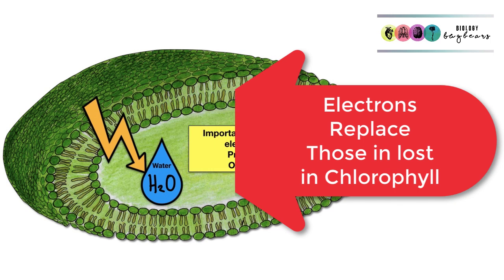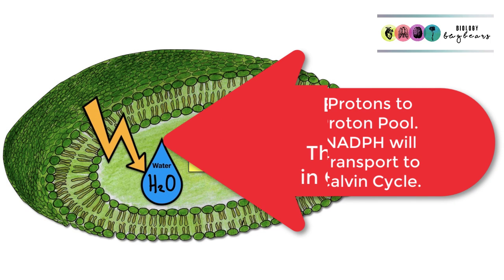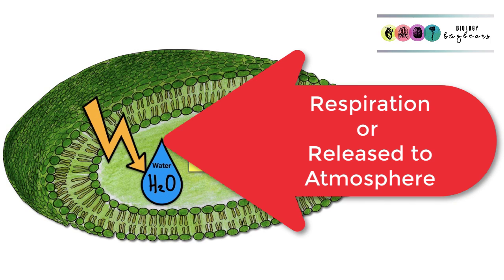The electrons go to replace those lost by chlorophyll in photosystem 2. The protons go into a proton pool and will eventually be transported by NADPH to the dark stage reactions or the Calvin cycle. The oxygen either gets used internally by the plant cell for respiration, but most of it gets released to the atmosphere through the stomata.